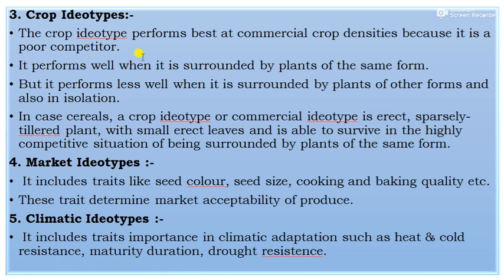The third type is crop ideotype, which performs best at commercial crop densities. Because it is a poor competitor, it performs well when surrounded by plants of the same variety — for example, sorghum planted among the same family. Its competitive performance is lower over a wide range of densities and is also less effective in isolation. In cereals, the crop ideotype is erect, sparsely tillered, with small erect leaves, and able to survive in the highly competitive situation of being surrounded by plants of the same variety.